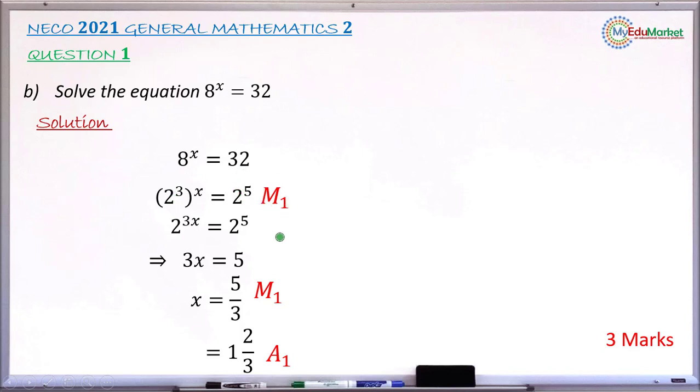The next mark is for simplifying and attempting to solve for x after this level where you divide both sides by the coefficient of x. You have this method 1 mark. And when you have the value of x exactly as 1 whole number 2 over 3, you have this accuracy 1 mark. So in total, if everything is done correctly, you have 3 marks.